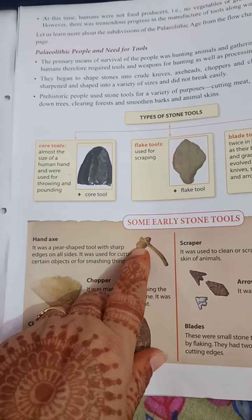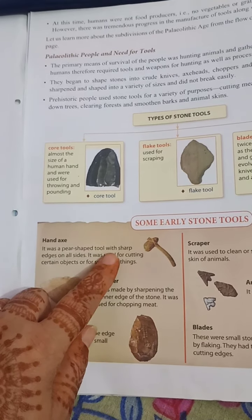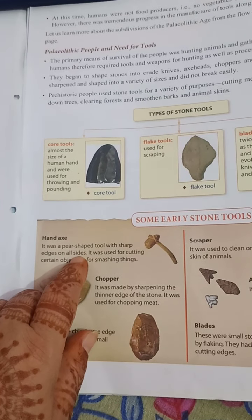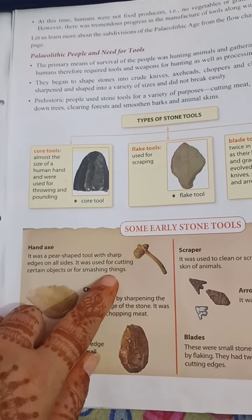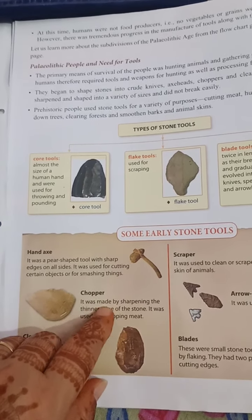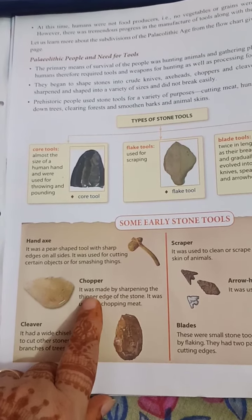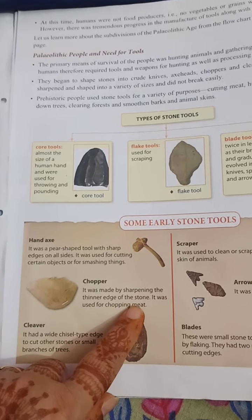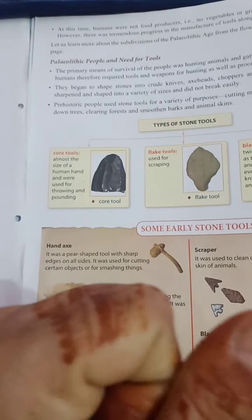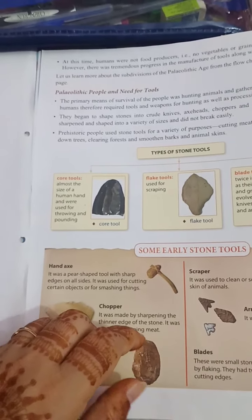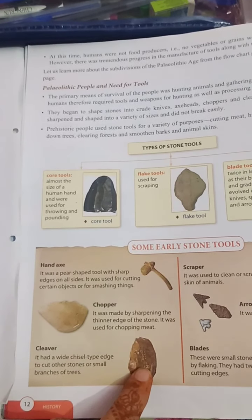Hand axe: here one part is stone and the other is wood. It was a pear-shaped tool with sharp edges on all sides. It was used for cutting certain objects or for smashing things. Next is the chopper — it was made by sharpening the thinner edge of a stone. It was used for chopping meat and food.